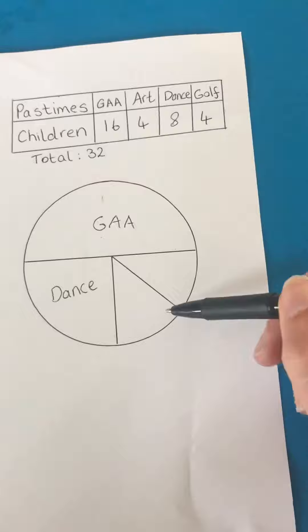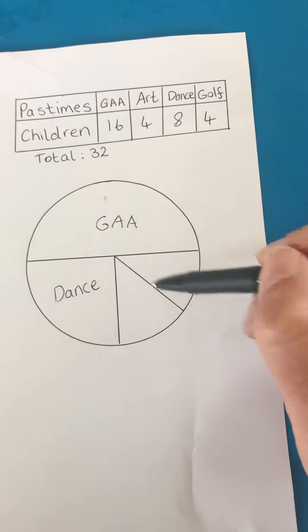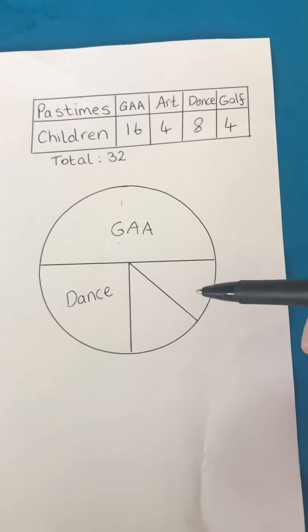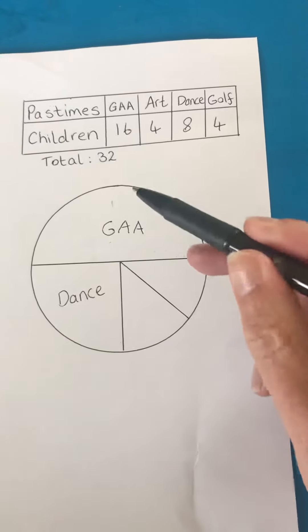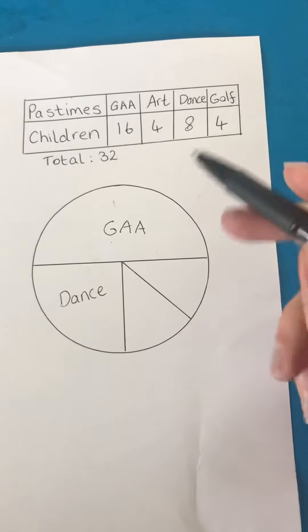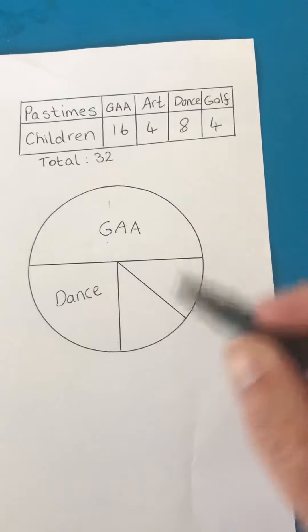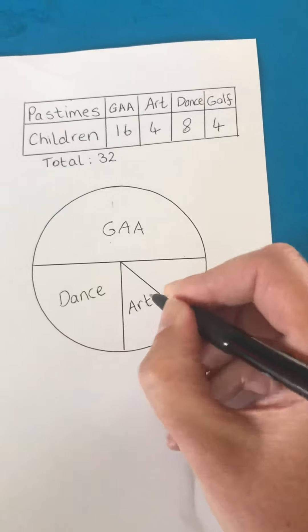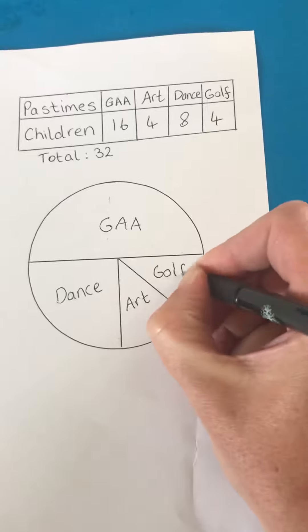I have two sectors left and I can see that the quarter has been split in two, which is two eighths, because we know that two eighths is the equivalent to a quarter. And an eighth of 32 is 4, so 4 children do Art and 4 children do Golf, and that is how I know what pastimes to put into the other two sectors of the circle.